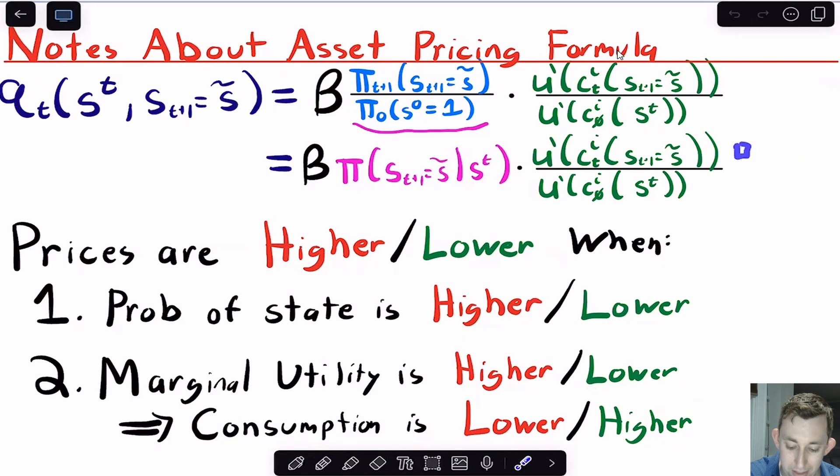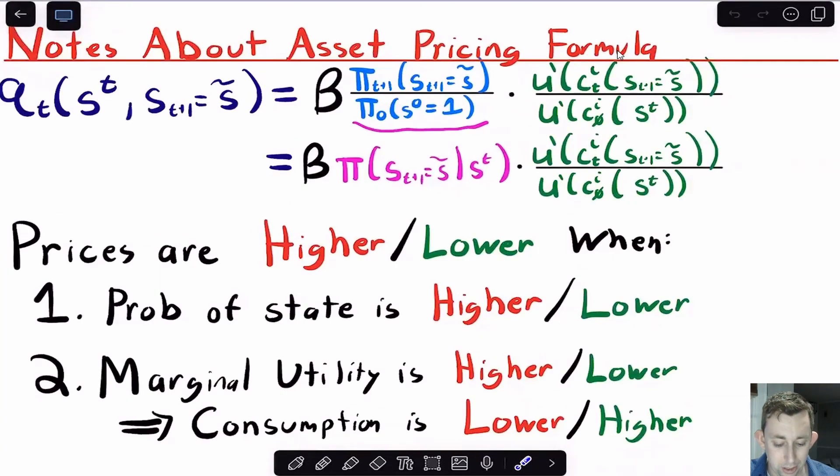On the other hand, if I have a very small endowment that's going to be coming my way in that particular state of the world tomorrow, then my marginal utility is going to be pretty high because if I have not a lot of stuff, the extra utility I get from getting one more coconut is going to be pretty high. And if the extra utility I get from another coconut is pretty high, that's sort of my marginal benefit, just sort of scaled by these other things. And so I'd be willing to pay a pretty high price for a coconut. And so my price should be higher if my marginal utility is also higher, but my marginal utility being high means that my consumption is low. My marginal utility being low means that my consumption is high, means that I have a lot of coconuts today.